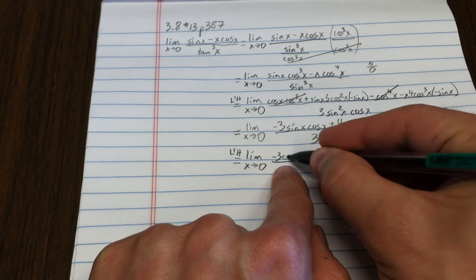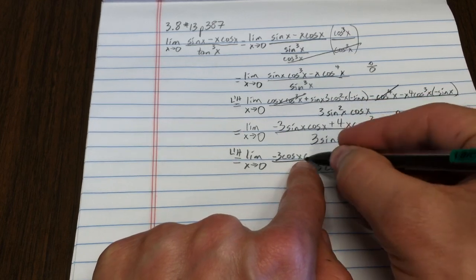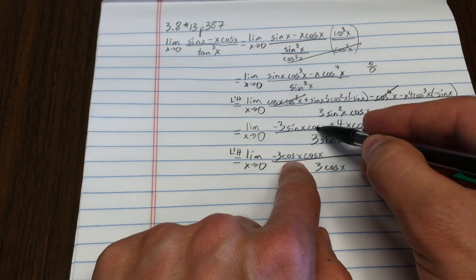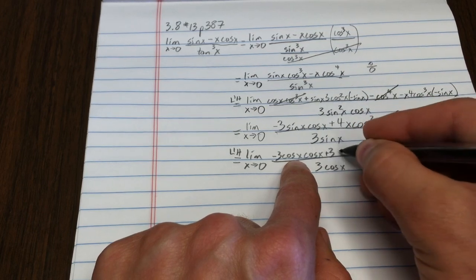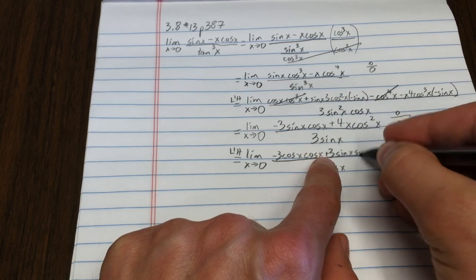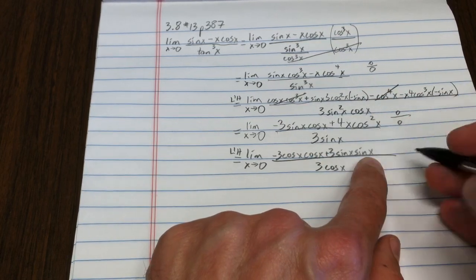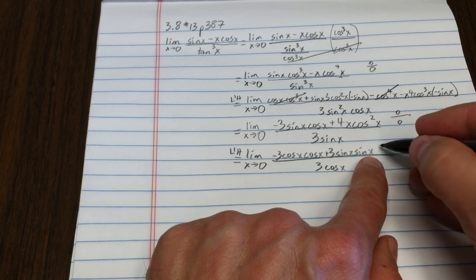I still have to use the product rule here. I have negative 3 cosine x times cosine x. Then, taking the derivative of the second term gives me positive 3, sine x, sine x. Remember, the derivative of cosine is negative sine. That's why I changed the sign there.